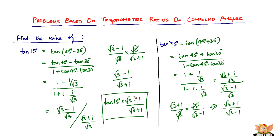This is just the reciprocal of tan 15 degrees — so this is tan 75 degrees. Made so simple by the use of compound angles. That ends these problems as well as this video. I'll see you in the following videos with more problems based on trigonometric ratios.